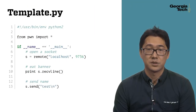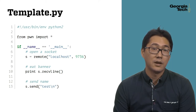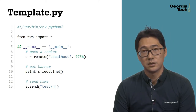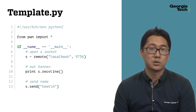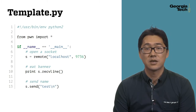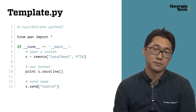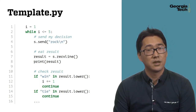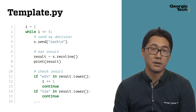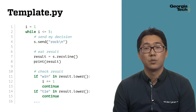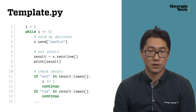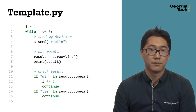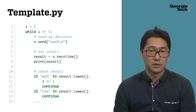To help you, we also provide a template Python program that you can extend. This Python script demonstrates a simple use case of pwntools. It first connects to localhost at port 9736 and receives one line — the welcome message — then it sends a username, 'test', as a stream. Once the connection is established, you can now play the game. In this template, we are always sending 'rock' and checking if we win the game. If we win five times in a row, we terminate the program. When writing your exploit for the remote environment, please use this Python template as a baseline.